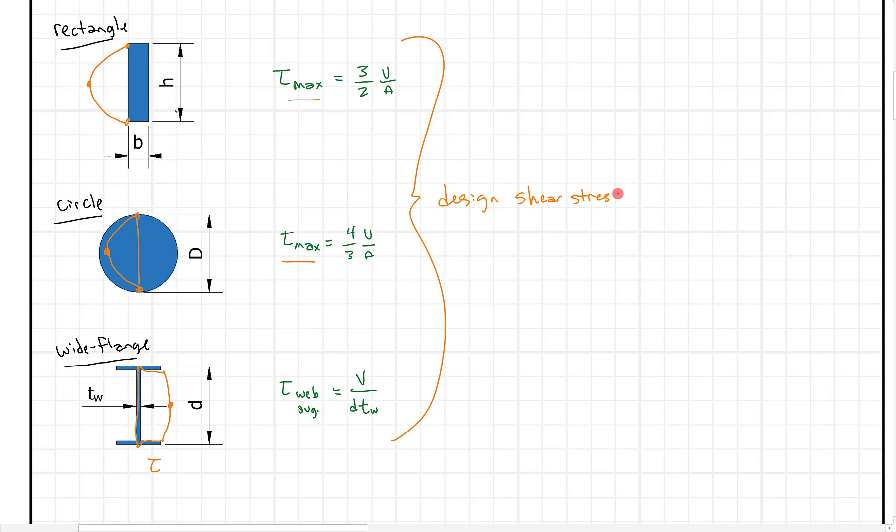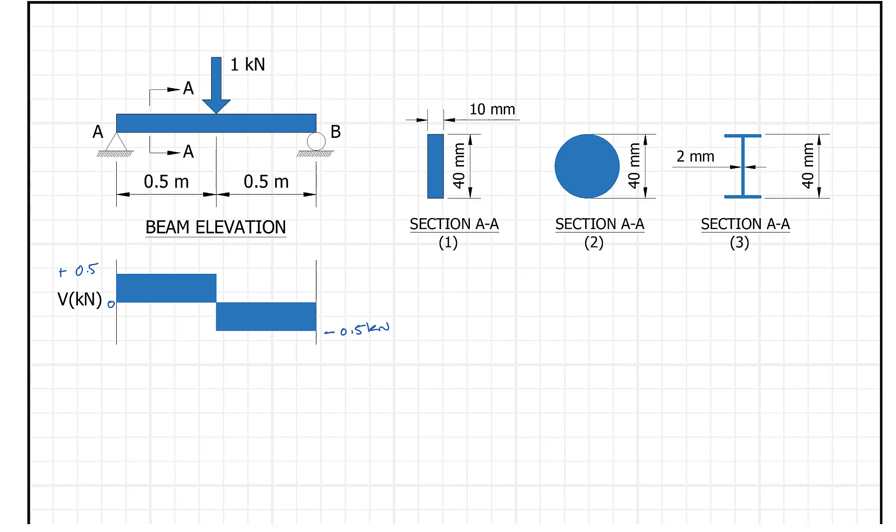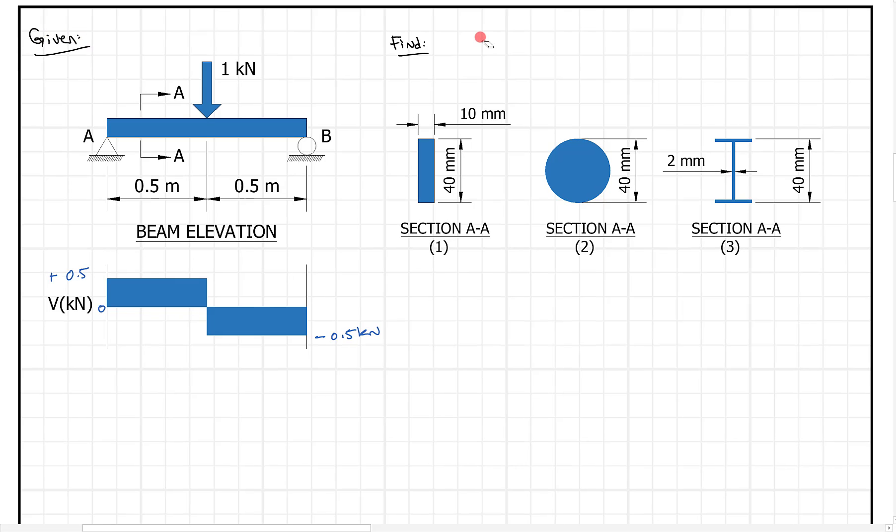So let's go ahead and look at an example. I'm just going to scroll down here. So if this is what we're given, let's say we are given this problem. And what we want to find is the max shear stress in each of these sections. And you'll notice that I wrote in here the max design shear stress. So what we're looking at here is tau max, tau max, and tau for the web average.